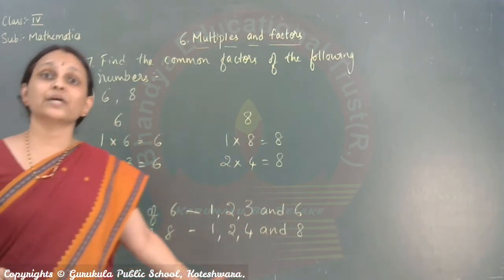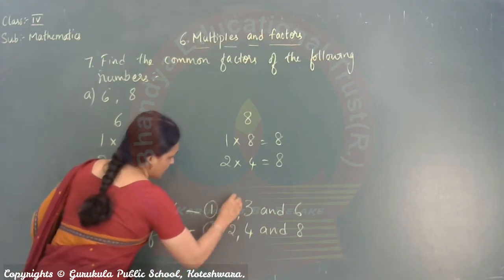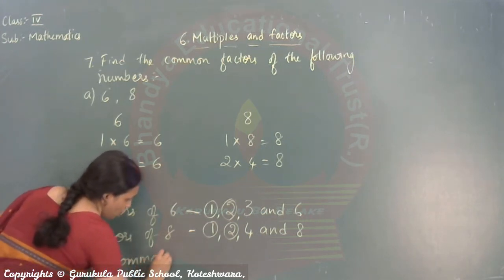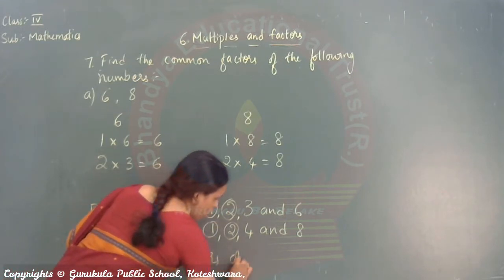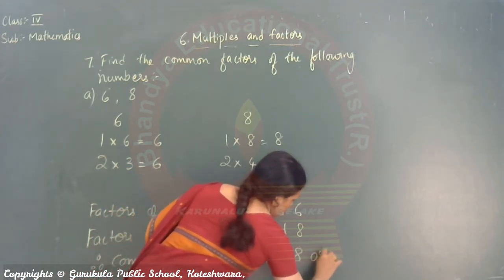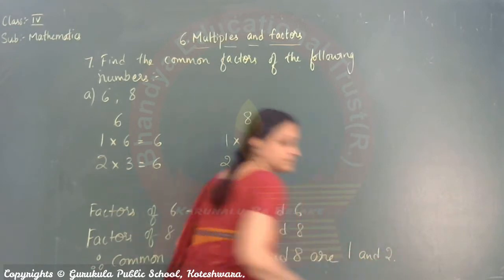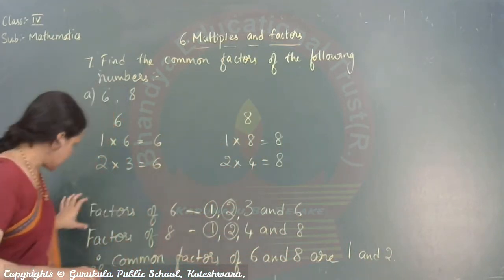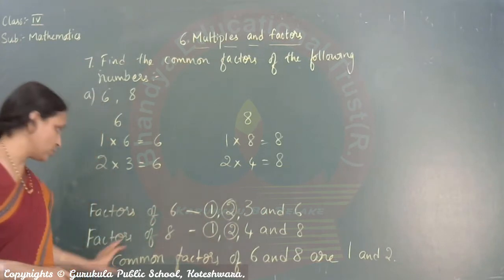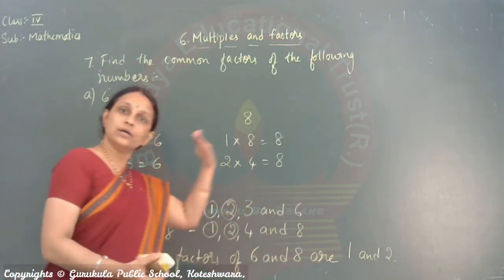Now, how to find the common factors? What is common here? That you have to write. Now, here it is 1 and 2 only. So, you have to write. Therefore, common factors of 6 and 8 are. What are the common factors? 1 and 2. That's it. So, finding factors however you know. Write the factors of both the numbers. Circle which are common. And write the statement. Therefore, common factors of 6 and 8 are. That's it.